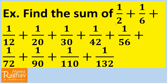For finding the sum, two things strike our mind first. We check whether this series is in AP or GP. But we find that this series is not in AP or GP, because if you subtract 1/6 from 1/2, and 1/12 from 1/6, the common difference D will be different.